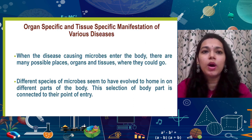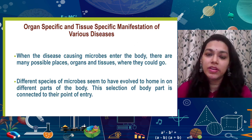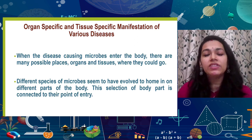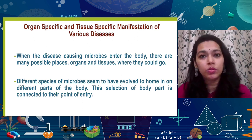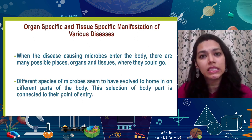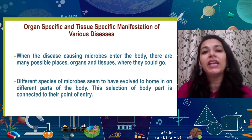First, let's talk about organ-specific and tissue-specific manifestations for various diseases. When any infectious agent enters our body, we have certain signs, symptoms, and manifestations that tell us something is wrong and needs attention. How do we know the probability of having a particular disease? It depends on two things: first, which group that particular organism belongs to. There might be bacteria, there might be viruses, there might be protozoa, there might be fungi, or there might be worms like helminths.